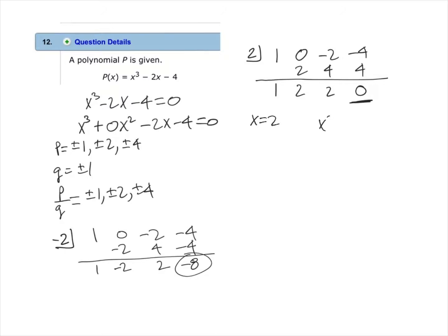We can now factor x squared plus 2x plus 2, which is obtained from the coefficients in the bottom row of our synthetic division whenever we get a 0 in the end, meaning no remainder.